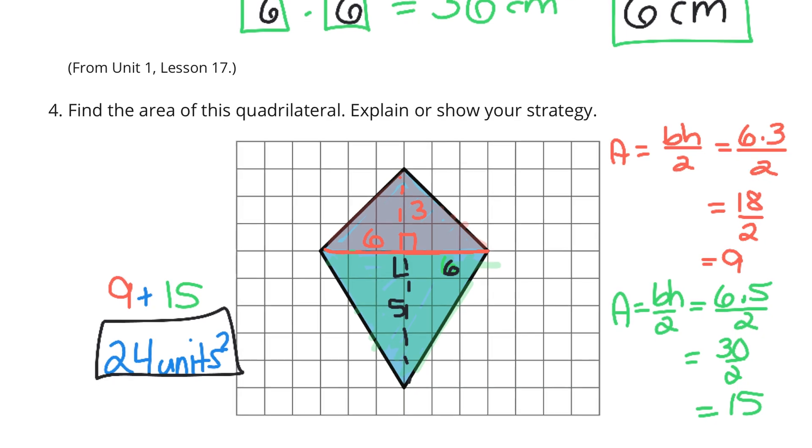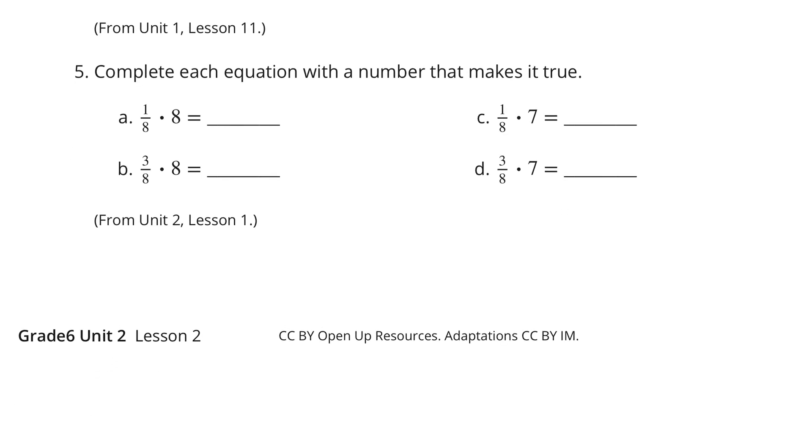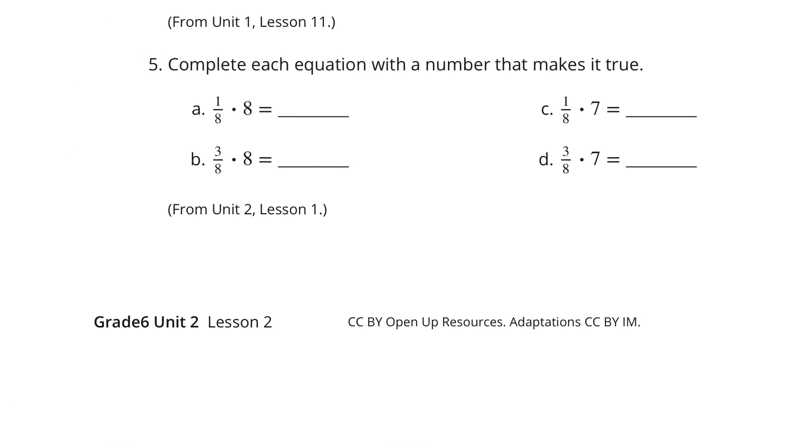Lastly, question 5. Complete each equation with a number that makes it true. 1 eighth times 8 equals, well, 1. 3 eighths times 8, well, that's 24 over 8, which is just 3. 1 eighth times 7 is 7 eighths. And 3 eighths times 7 is 21 eighths. Now, if you wanted to convert that into a mixed number, you could do so and call it 2 and 5 eighths as well. And the decimal forms work as well, but might as well just keep it fractions here.